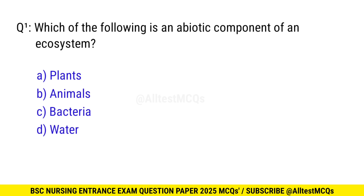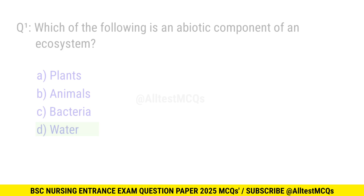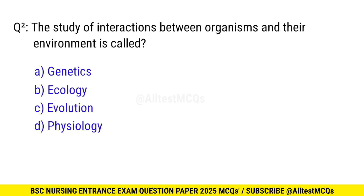Question No. 1: Which of the following is an abiotic component of an ecosystem? The right option is D: Water. Question No. 2: The study of interactions between organisms and their environment is called? The correct option is B: Ecology.